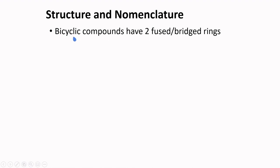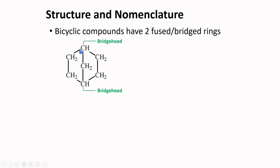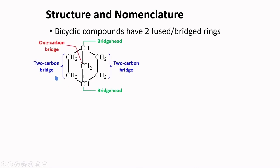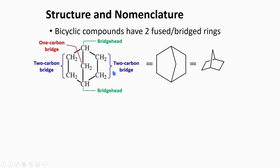Bicyclic compounds are another type of saturated hydrocarbon. They have two fused or bridged rings. In bicyclic compounds, bridge heads are the carbons that connect the two fused rings, and carbon bridges are on the several sides of the fused rings. For example, one structure has a two-carbon bridge, another two-carbon bridge, and a one-carbon bridge.